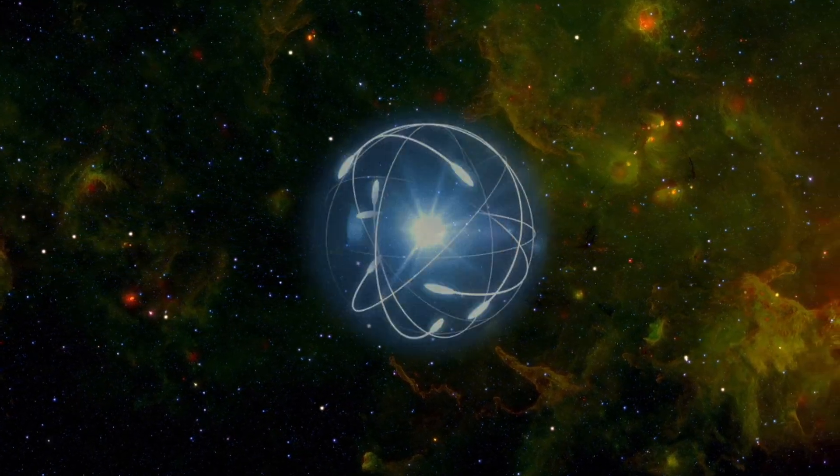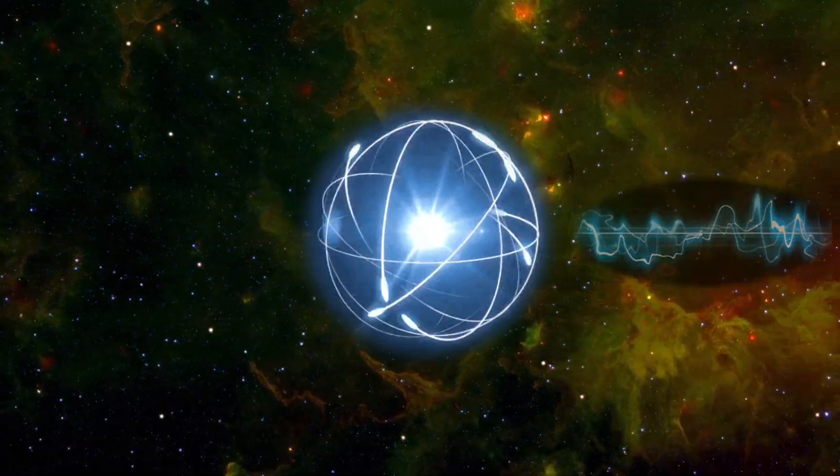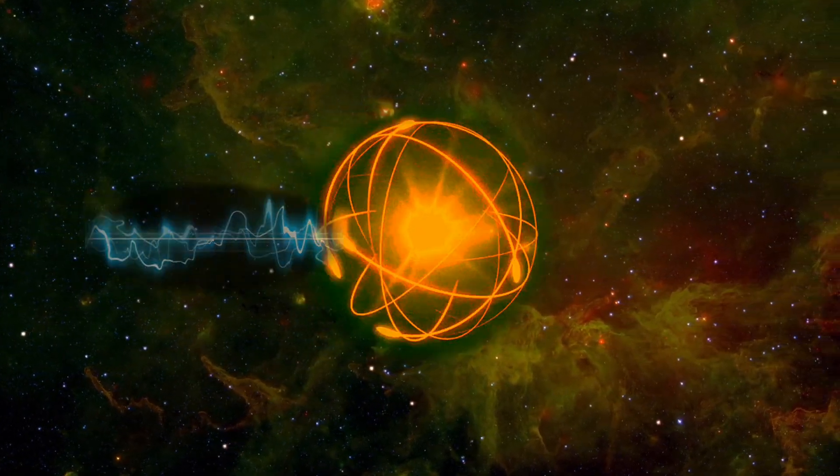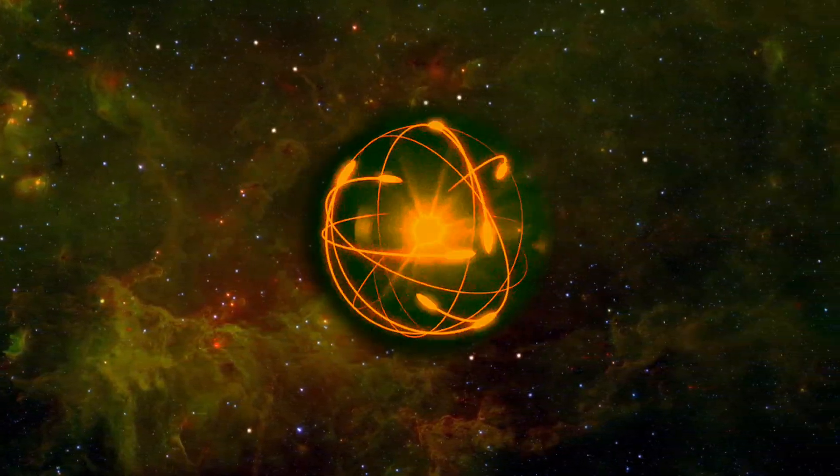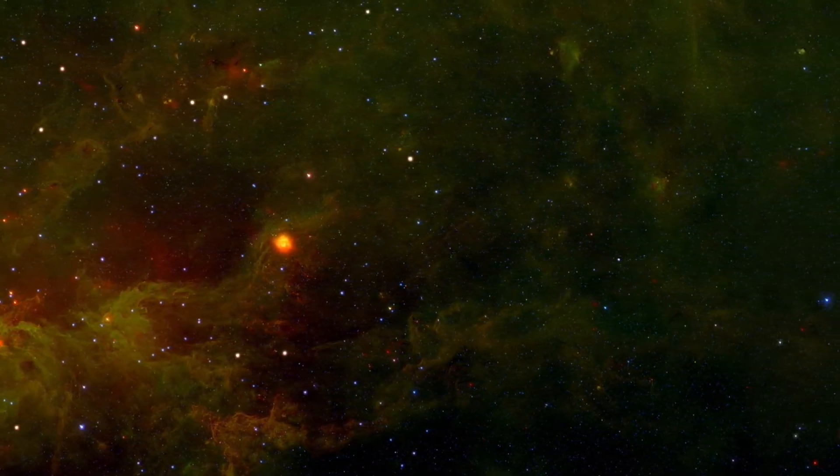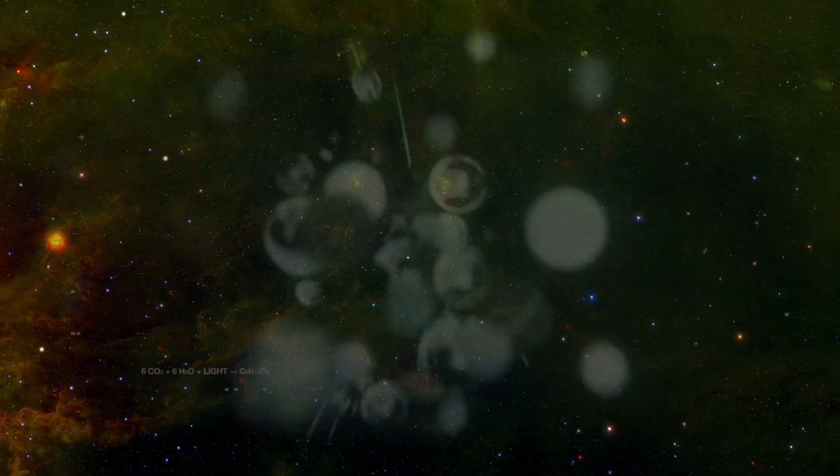Everything in the universe is either a body of matter or packets of energy. Matter emits energy from itself and energy changes the shape of matter. Different shapes of matter emit different shapes of energy and the cycle goes on. This is how physics summarized the universe for us.